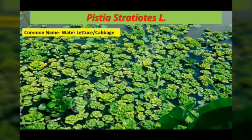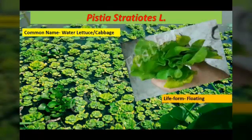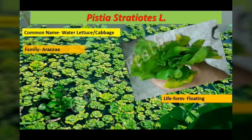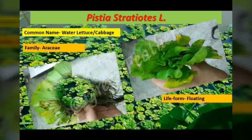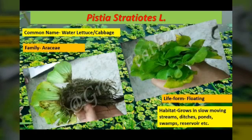Water lettuce belongs to the Araceae family. It is a small evergreen perennial plant with feathery roots which form rosettes of leaves, and it is found mostly in slow-moving water like lakes, ponds, and ditches.